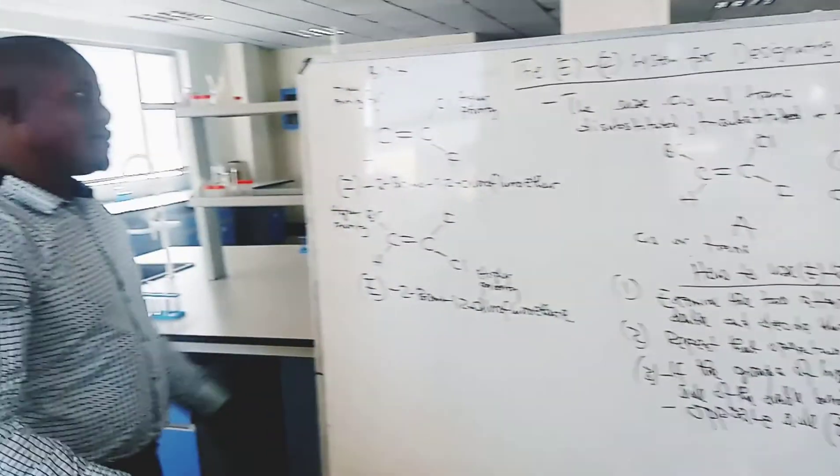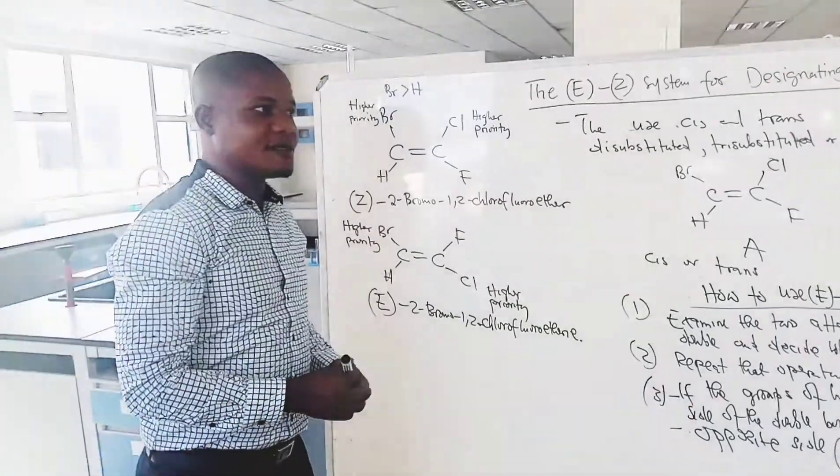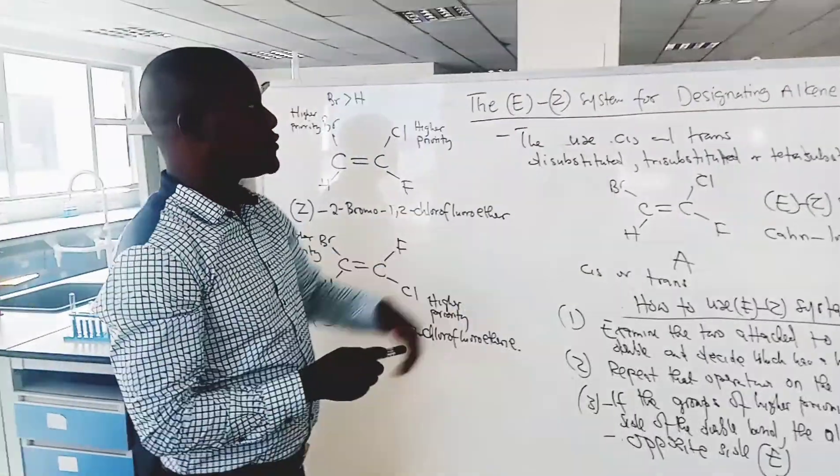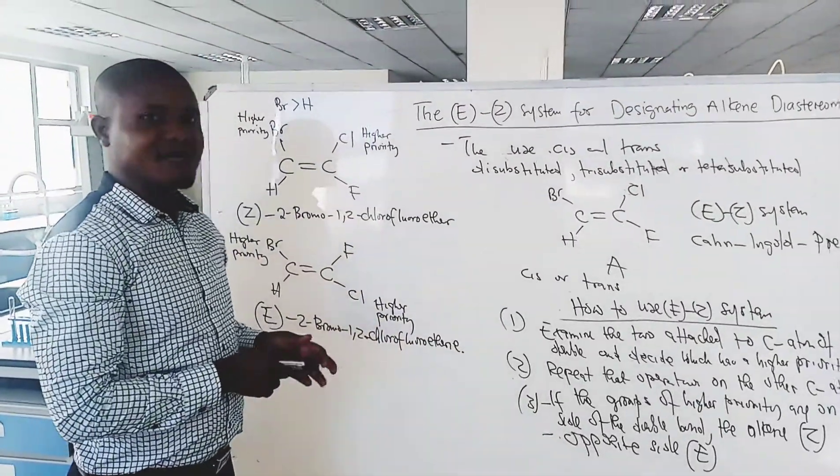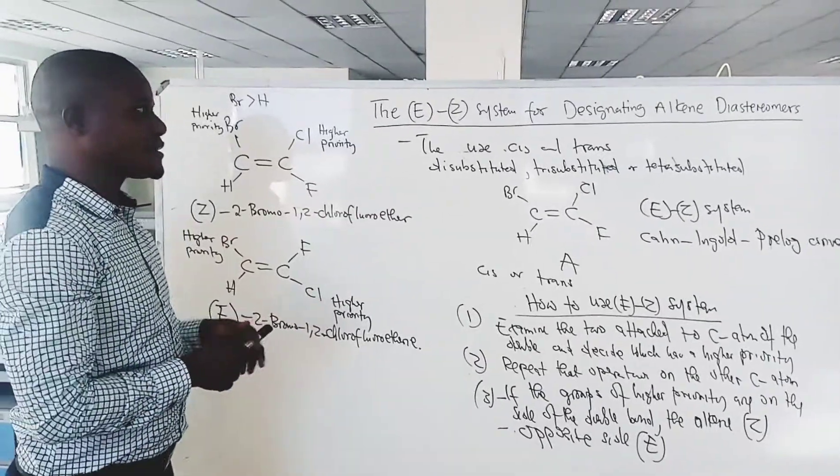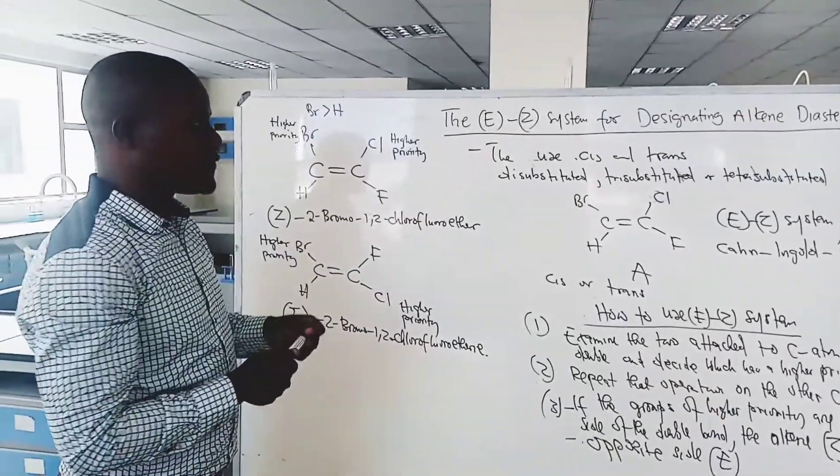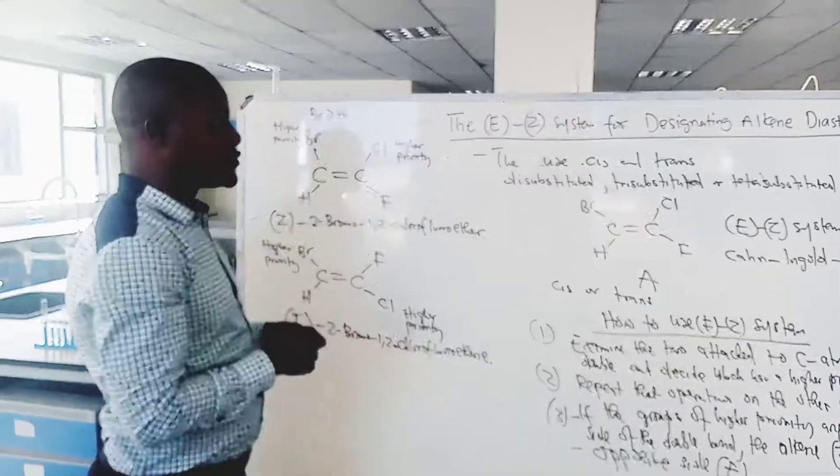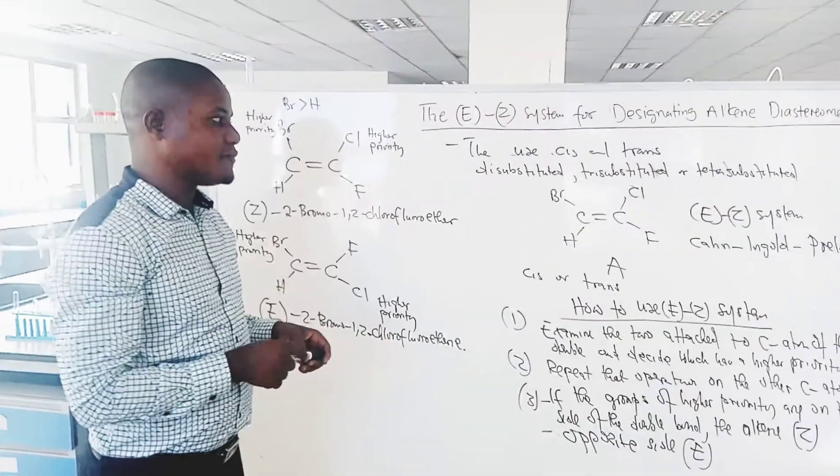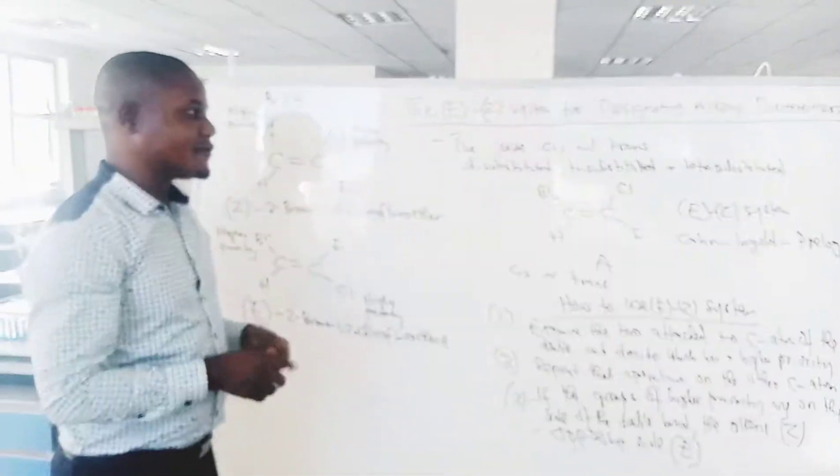So, this is how we can use the E-Z system which applies to all alkene diastereomers. So, the cis and trans cannot work if there are no two groups that are the same. Okay. So, thanks for watching.